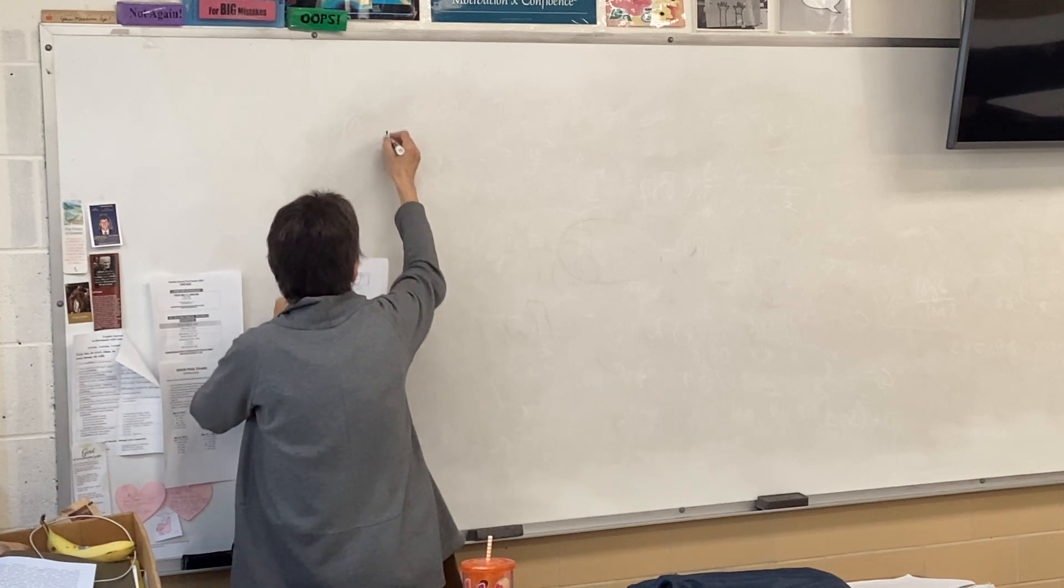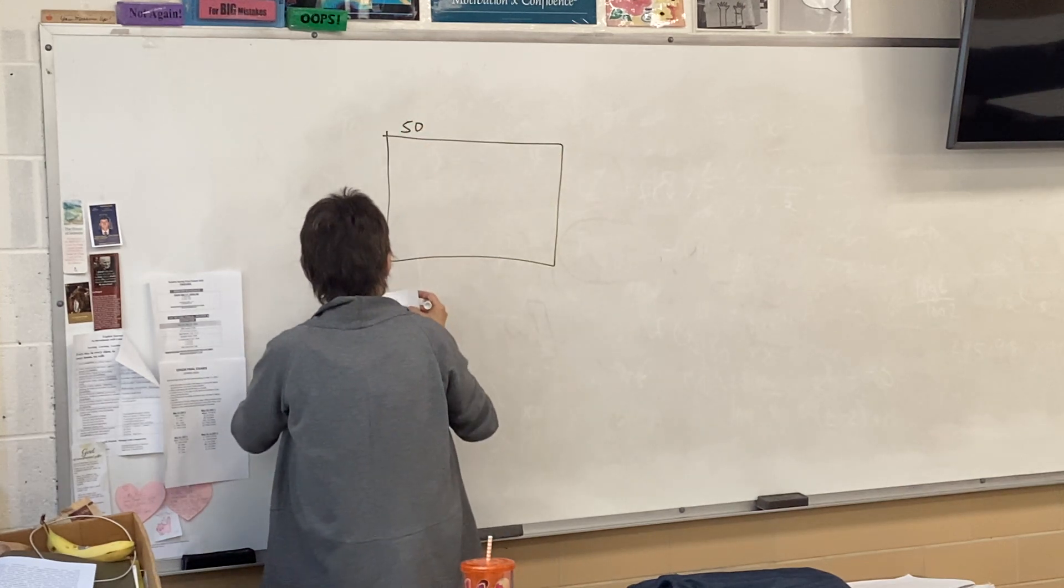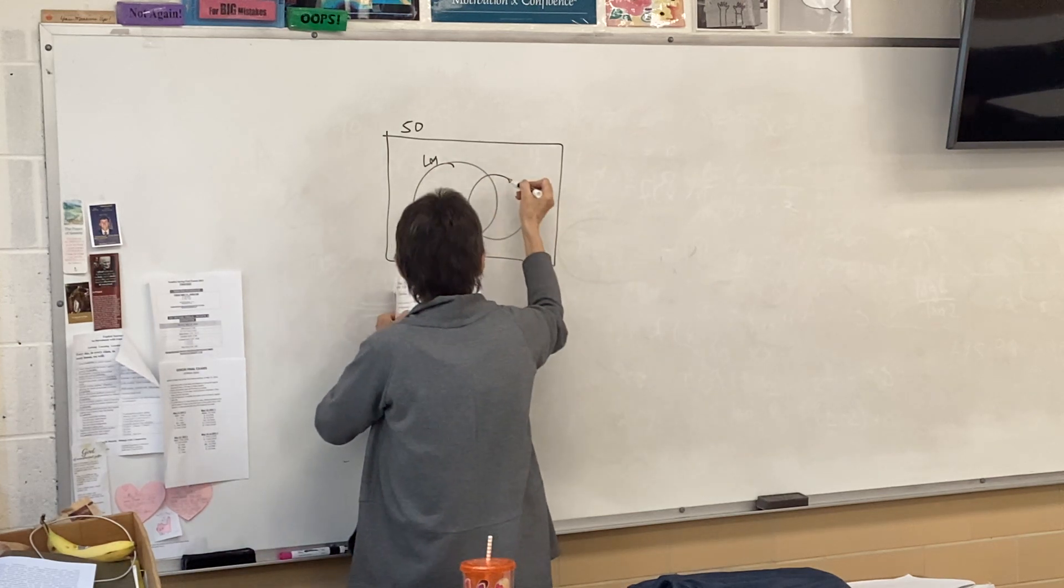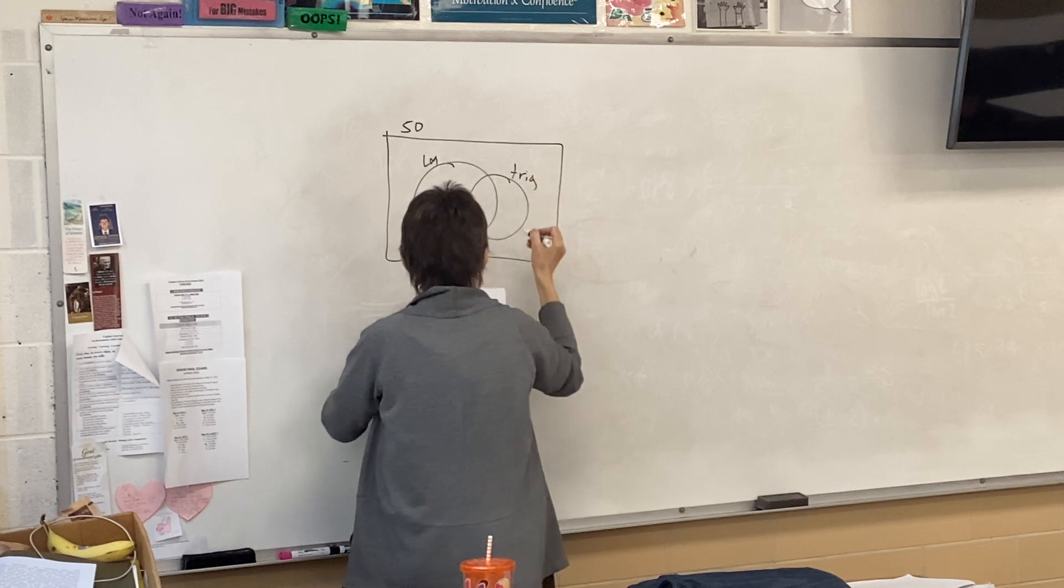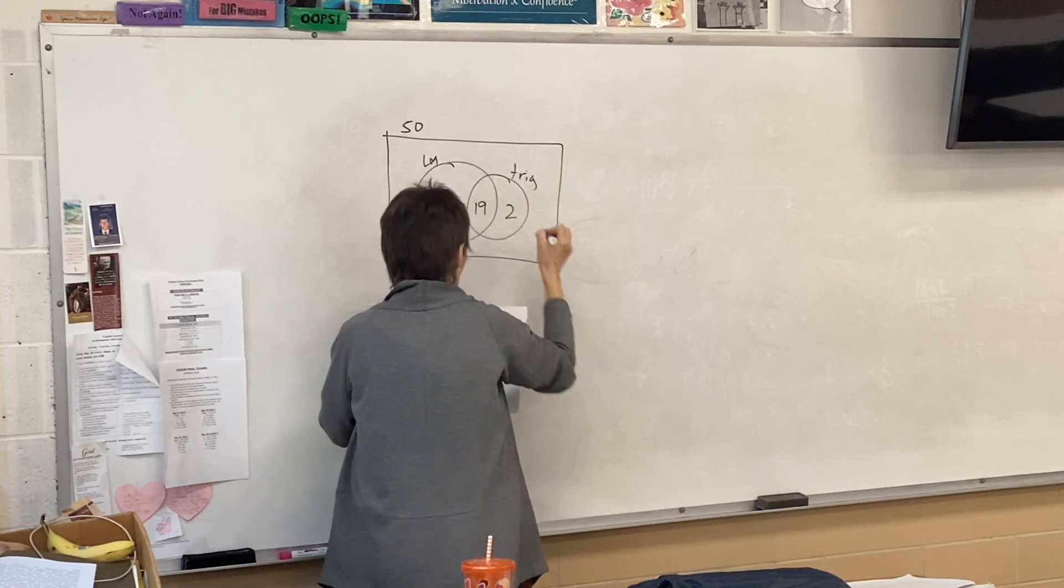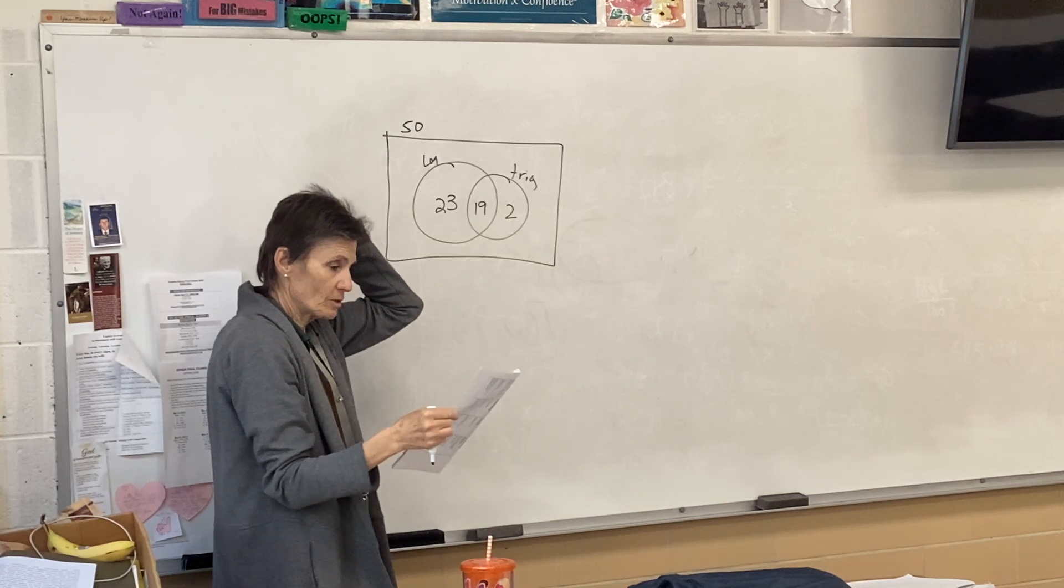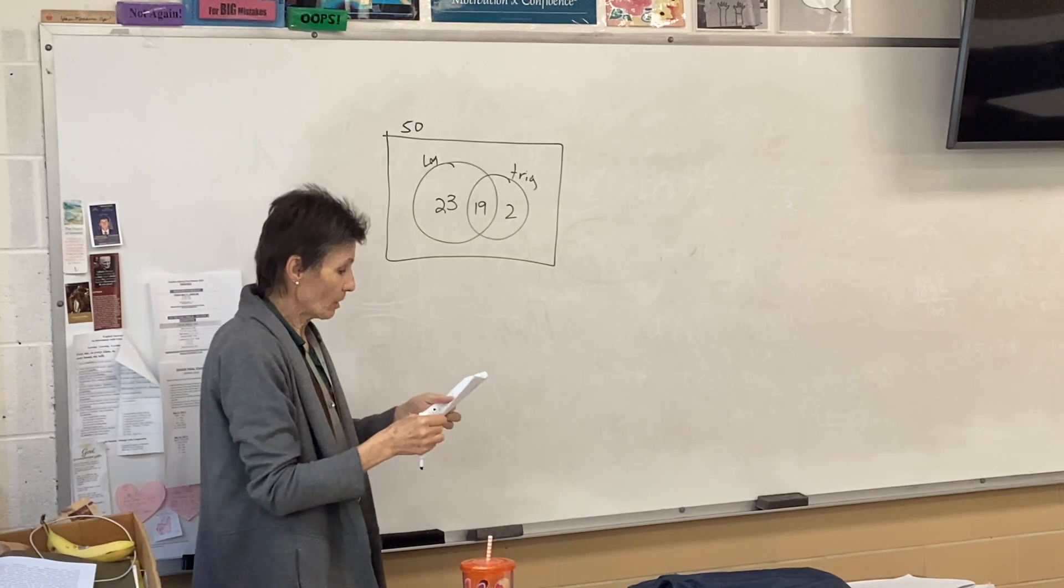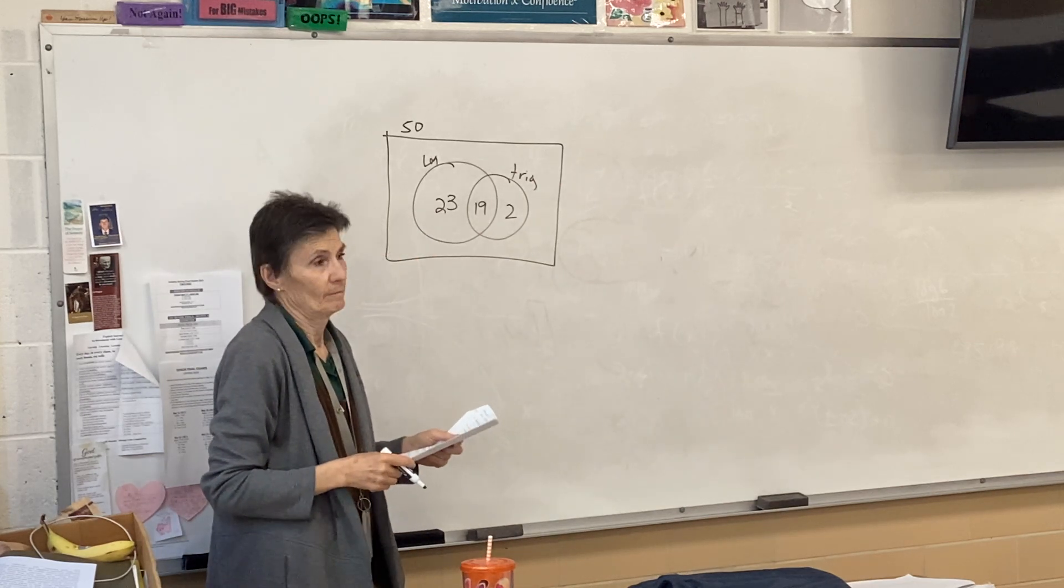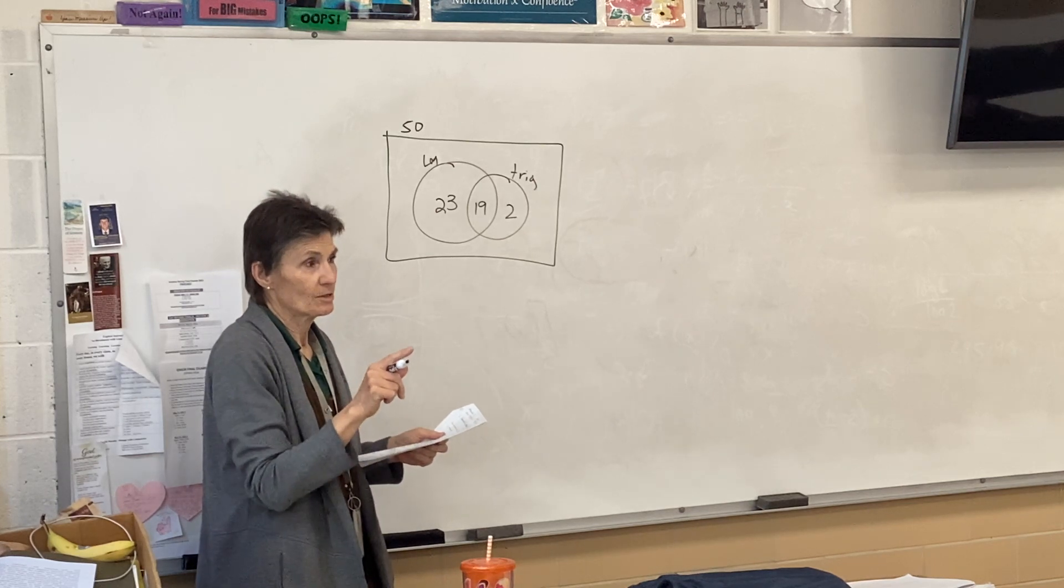So here we have 9-3 number two. All right. We have 50 kids in the class. And we like the logarithms and trigonometry. And we have 23, 19, and 2. All right. So far, so good? How many, like, only logarithms? 23. If you don't get that, you need to ask, guys. You got it? 23?